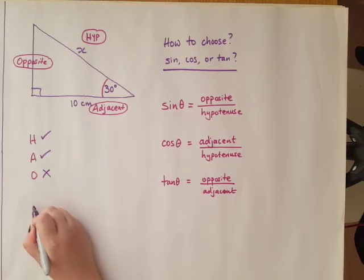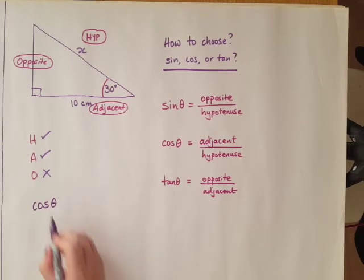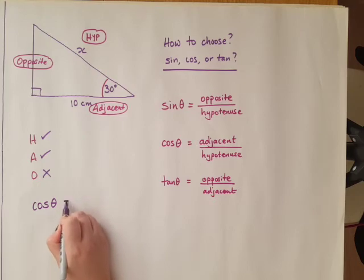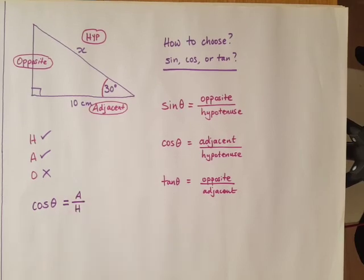Here's our answer: cos angle. We're going to use this symbol for the angle, the Greek letter theta. Cos theta equals adjacent over hypotenuse, and now I'm going to write down the numbers and letters that we know.